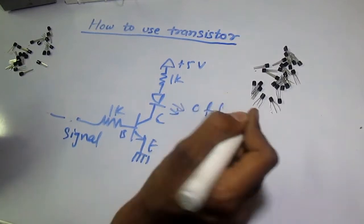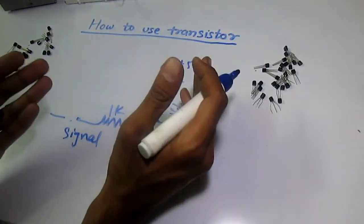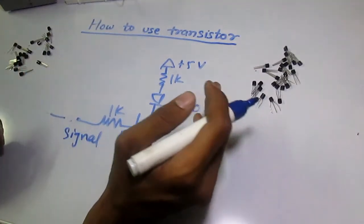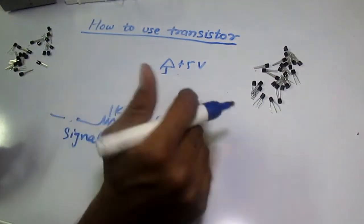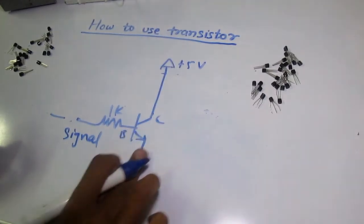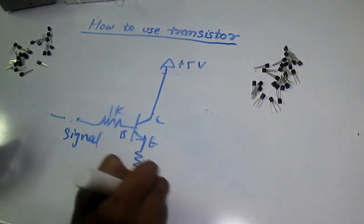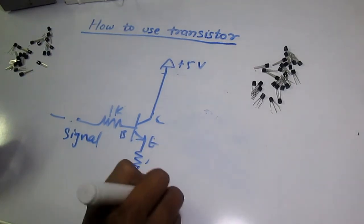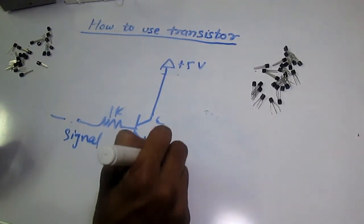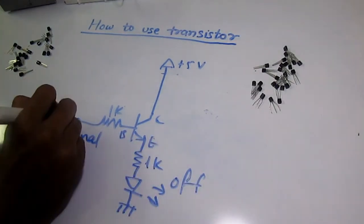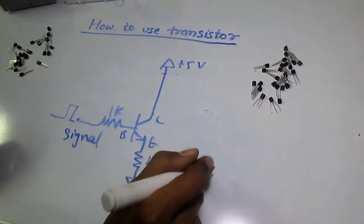You can also put the load on the emitter side - the circuit will be like this. Again, if you give a low signal the LED will be off, and if you give a high signal the LED will be on.